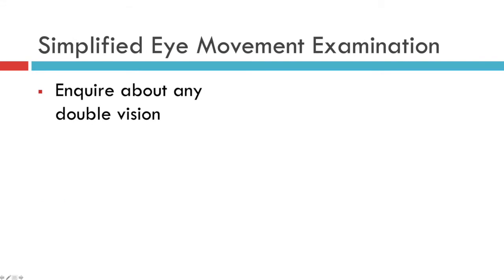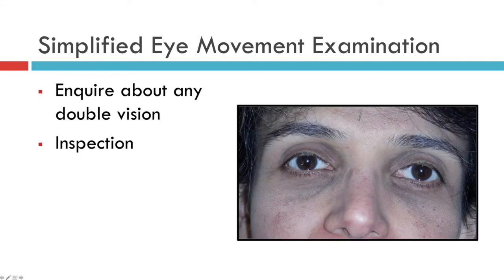First, you should inquire from the patient about any double vision. Next, you should inspect the eyes as with any clinical examination. Many people are tempted to get the patient to look at their finger, but I would strongly encourage you to use a point source of light. The advantage for the patient is that they only have one point to look at, and the advantage for the doctor is that they can see the corneal reflection and determine whether the patient's eyes are straight or not.